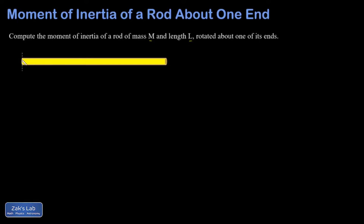The little dashed line here is the rotation axis. Moments of inertia change depending on where you pick the rotation axis, so you have to be clear about that.